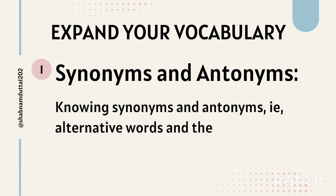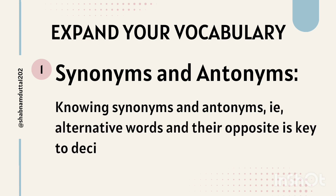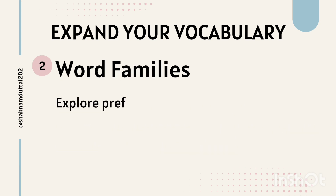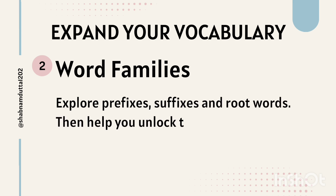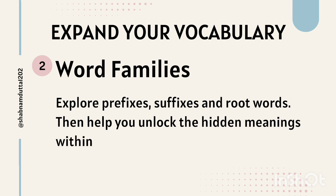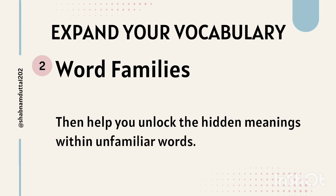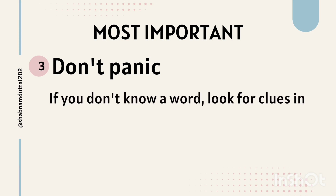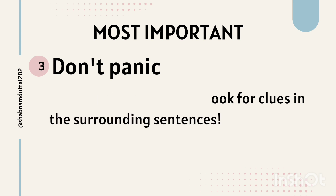Step 2 is expanding your vocabulary arsenal. Knowing synonyms and antonyms — that is, alternative words and their opposites — is key to deciphering missing words. Next, explore prefixes, suffixes and root words; they will help you unlock the hidden meanings within unfamiliar words. And most importantly, don't panic if you don't know a word — look for clues in the surrounding sentences.